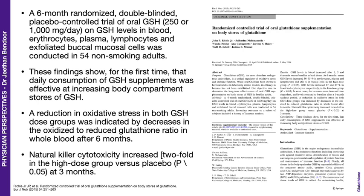Here is a six-month randomized double-blinded placebo-controlled trial of oral glutathione at 250 or 1000 milligrams per day, looking at glutathione levels in blood, erythrocytes, plasma, lymphocytes and exfoliated buccal mucosal cells in 54 non-smoking adults. Daily consumption of glutathione supplements was effective at increasing body compartment stores of glutathione. They also found reduction in oxidative stress in both dose groups, indicated by decreases in the oxidized-to-reduced glutathione ratio in whole blood after six months.